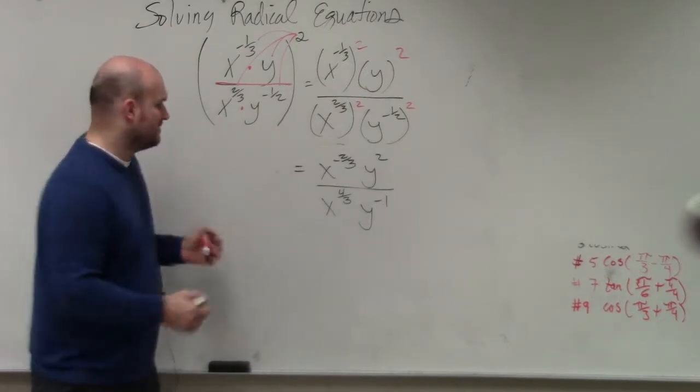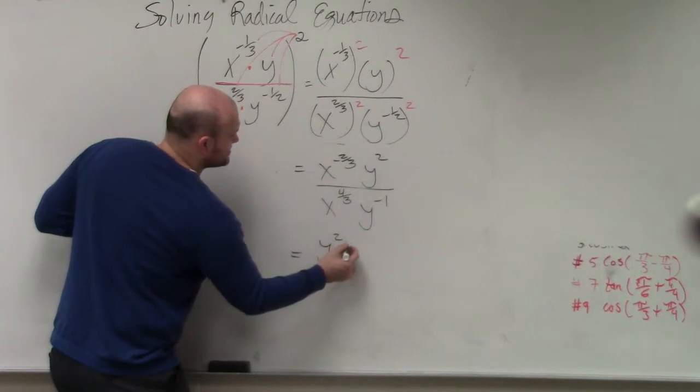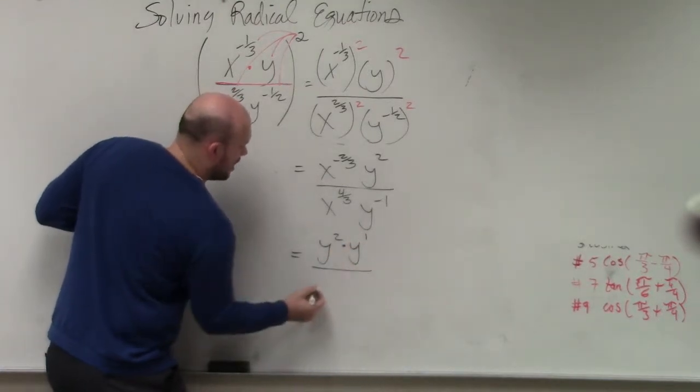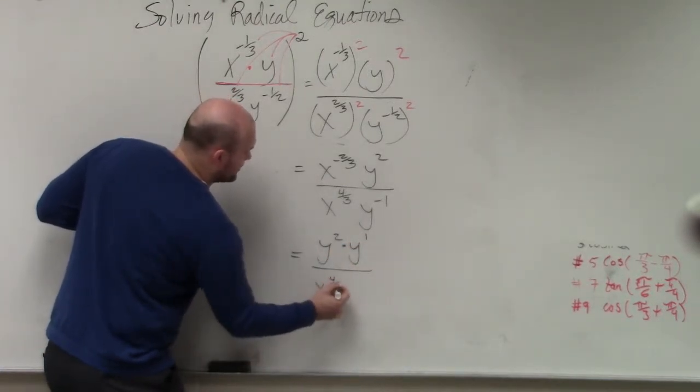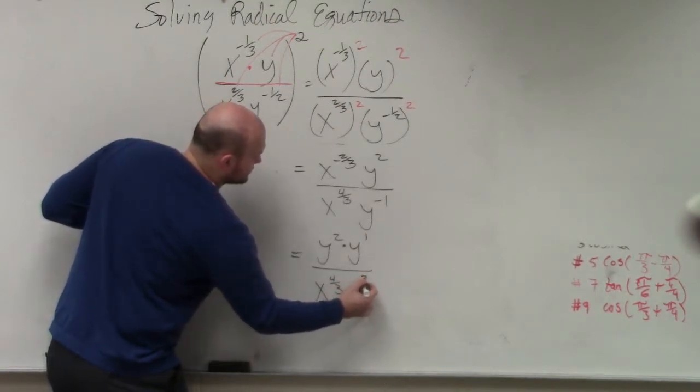Then I'm going to rewrite this so we have positive powers. So therefore I have y squared times y to the 1st all over x to the 4 thirds times x to the 2 thirds.